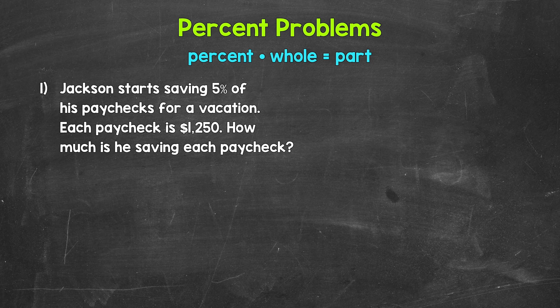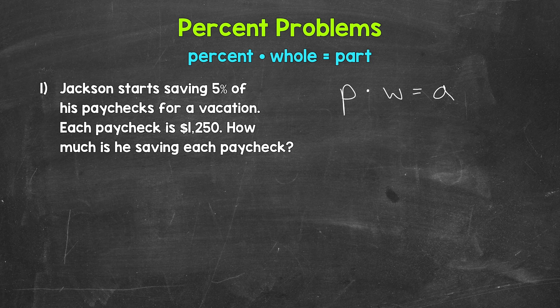Let's jump into number one, where we have: Jackson starts saving 5% of his paychecks for a vacation. Each paycheck is $1,250. How much is he saving each paycheck? Let's come to the side here and work through this. For our equation, we have P for the percent, times W for the whole, equals A for the part. Now we need to identify the different parts of the equation and plug in.